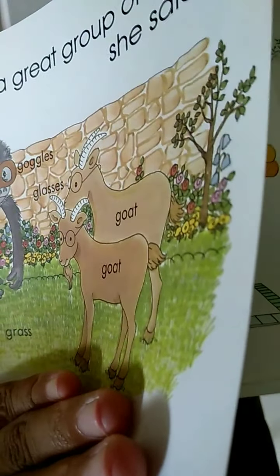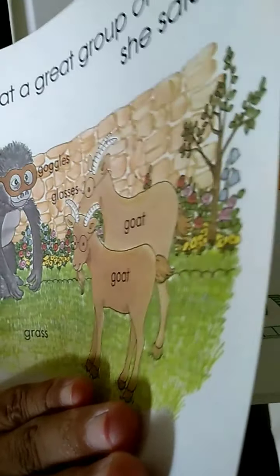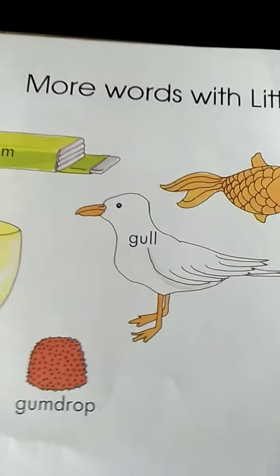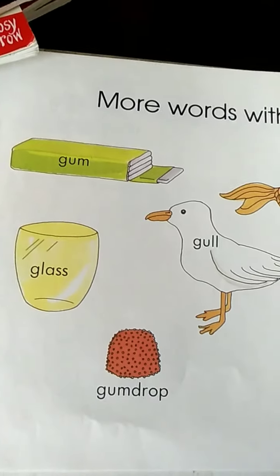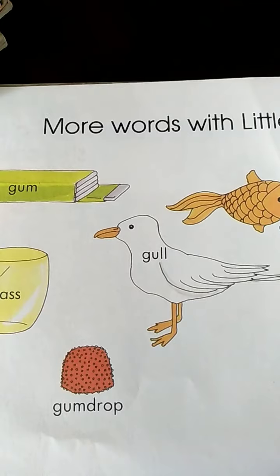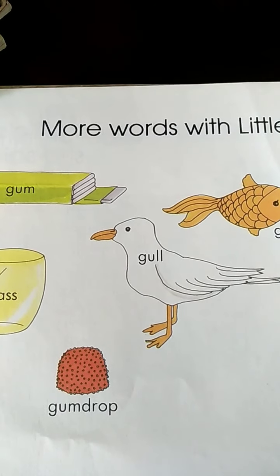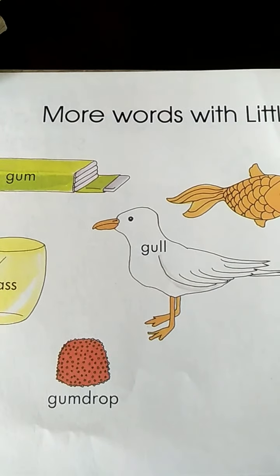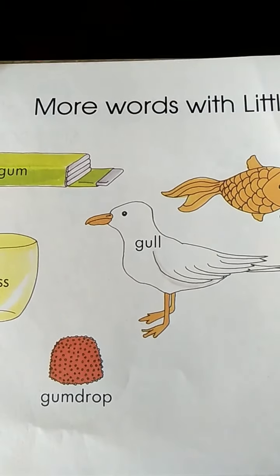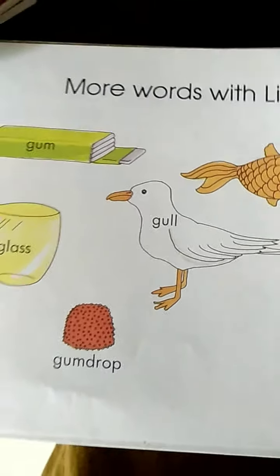Group. Group. G-R-O-U-P. Okay, what's the spelling of gum? G-U-M. G-U-M. Okay, what's the spelling of gumdrop? Oh, gum is there, and then you add P-R-O-P. Drop. Very good.